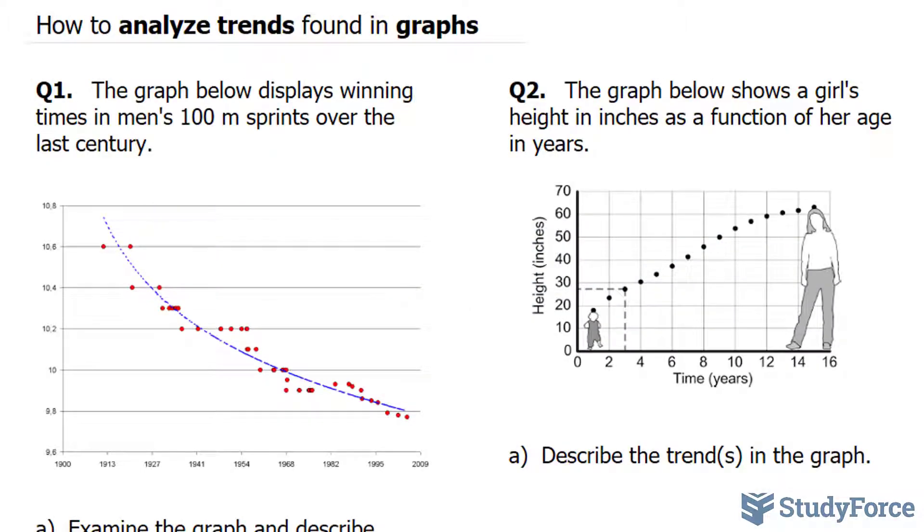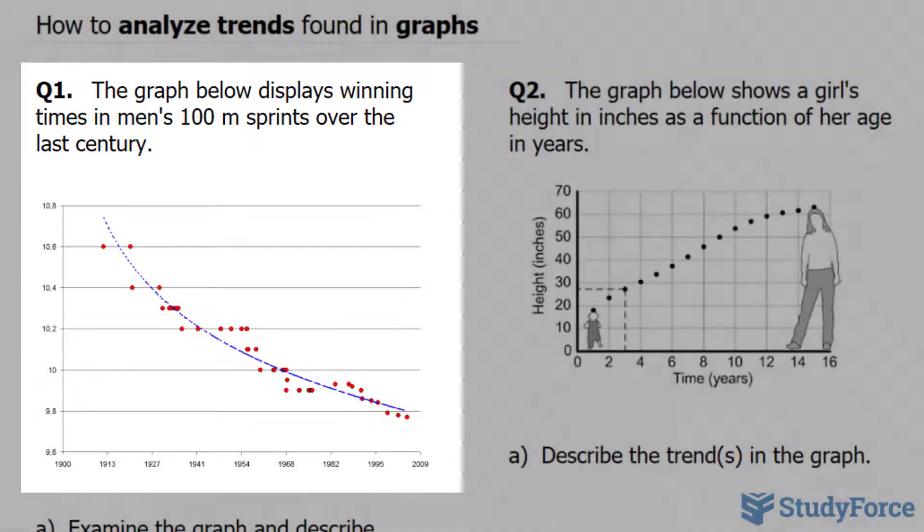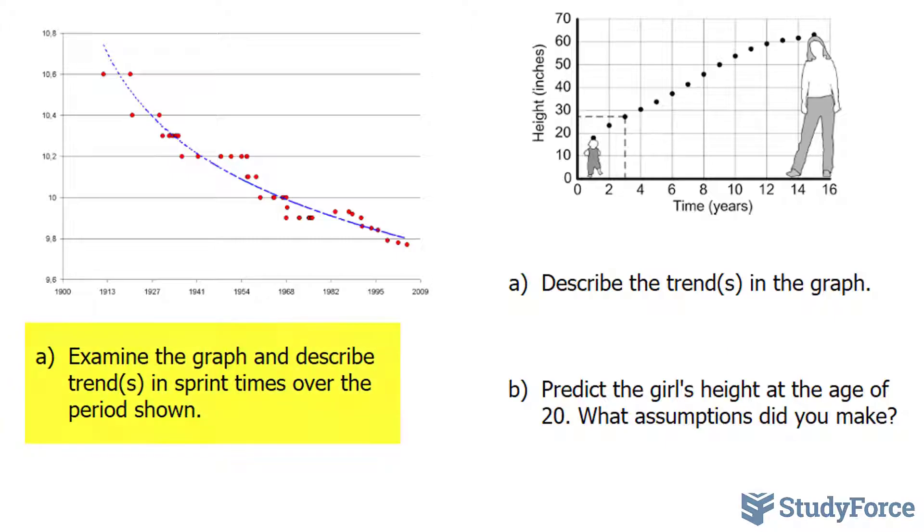In this video tutorial, I'll show you how to analyze trends found in graphs. Question 1 reads: the graph below displays winning times in men's 100-meter sprints over the last century. Part a: Examine the graph and describe trends in sprint times over the period shown.